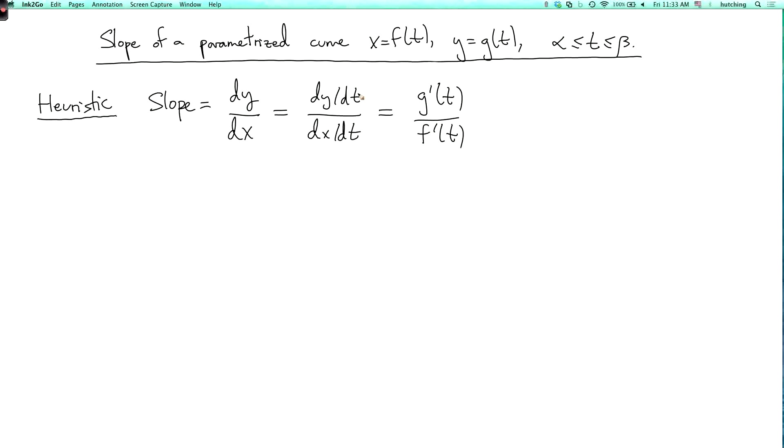Now in general you have to be careful, you can't just treat dt as if it were a number. And we'll see that when we get to multivariable calculus, if you do stuff like this, you'll get nonsense. However, in this single variable case it actually gives you the right answer. So the slope is equal to g prime of t over f prime of t. I'll give a more rigorous explanation of this in a minute.